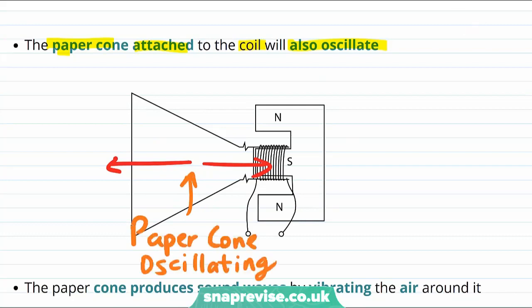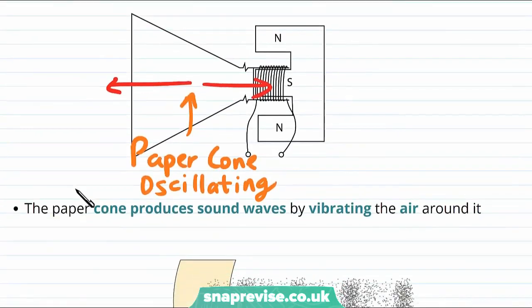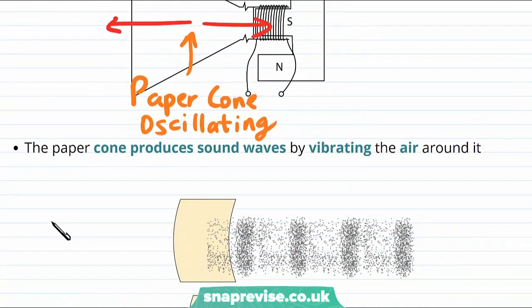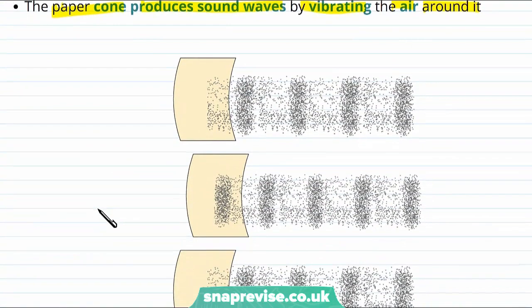Now it's easy to have lost track by this point, but the whole point in this is it was a loudspeaker and we wanted it to create sound waves. Well the paper cone will produce sound waves by vibrating the air around it as the cone moves backwards and forwards.